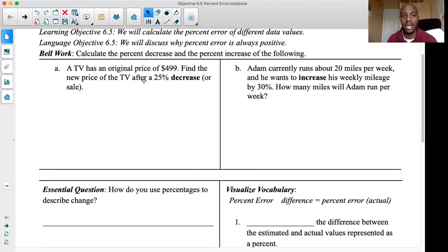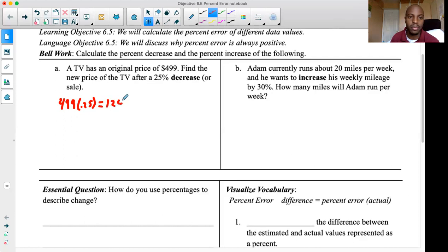They say they want you to find the new price of this TV after a 25% decrease or a 25% sale on that TV. So what I would want to do first is figure out, what is 25% of $499? And the way that we're going to do that is we're actually going to figure out 0.25 times $499.